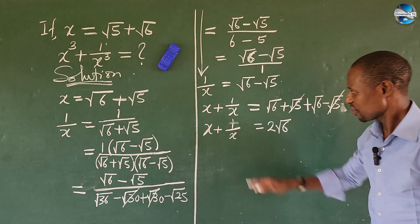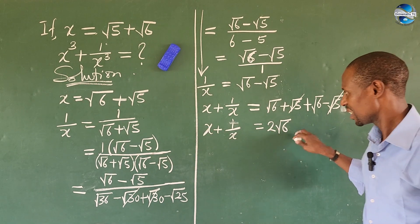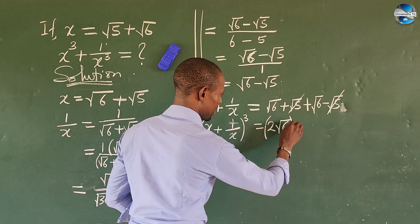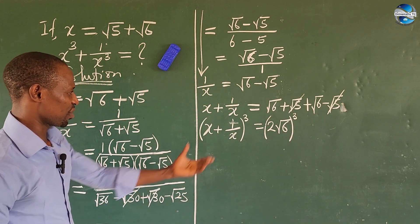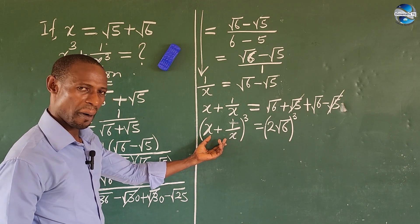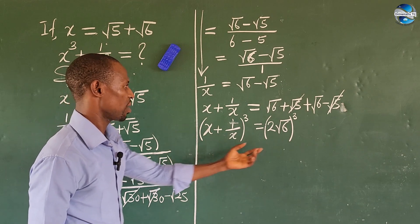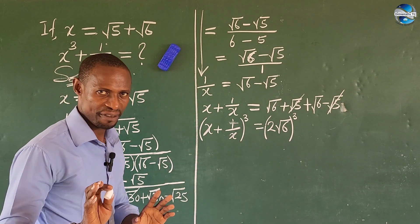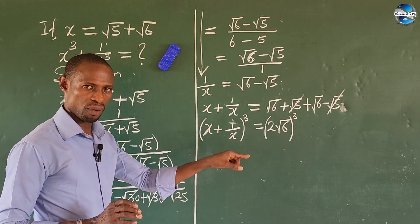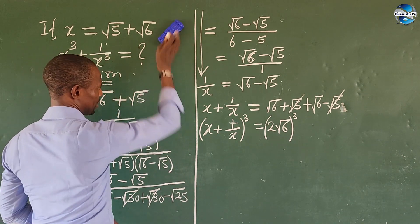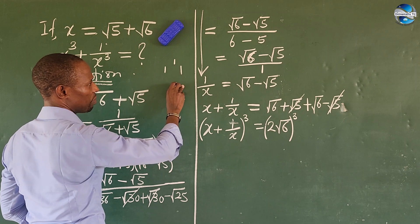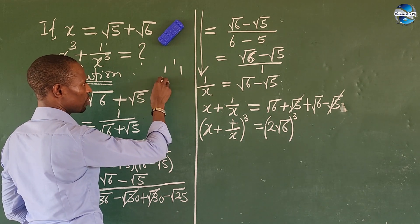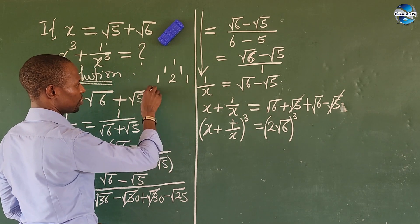Now we can take the cube of both sides of the expression. We cube the left side and equally cube the right side. We use Pascal's triangle — or binomial expansion — to open this up. The coefficients from Pascal's triangle are: for power of zero, one; for power of one, one one; for power of two, one two one; for power of three, one three three one.